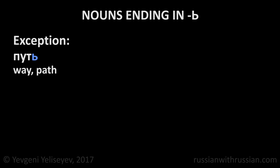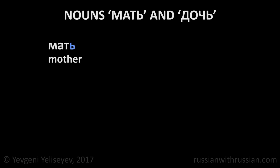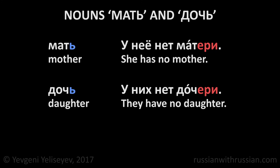The noun путь — way, path — is an exception. It has masculine gender but uses the ending -и. Пути. У меня не будет другого пути. I will have no other way. The nouns мать and дочь: Мать — mother. У неё нет матери. She has no mother. Дочь — daughter. У них нет дочери. They have no daughter.